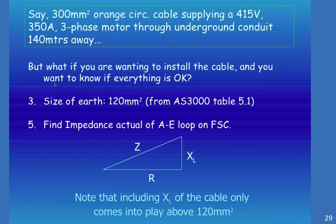But what if you are wanting to install the cable and want to know if everything is OK? We know the size of the earth is 120mm² from AS3000 table 5.1. We do our impedance triangle, noting that the XL of the entire cable comes into play above 120mm². We need the resistance and XL of the cable, then work out impedance using Pythagoras' theorem.